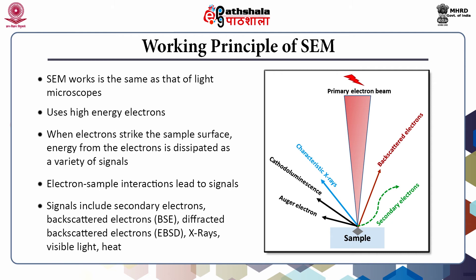These signals include secondary electrons, back-scattered electrons, diffracted back-scattered electrons, X-rays, visible light and heat. The production of scanning electron microscopy images utilizes the secondary and back-scattered electrons, whereas the crystalline structure, orientation of minerals and micro-fabrics are determined by diffracted back-scattered electrons. The X-rays are used for elemental analysis.